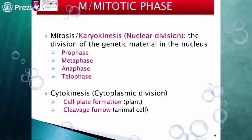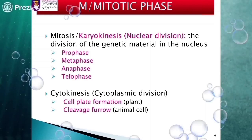M phase, or mitotic phase, consists of two parts: mitosis and cytokinesis. Keep in mind that cytokinesis is not a stage of mitosis. Mitosis consists of four stages: prophase, metaphase, anaphase, and telophase.